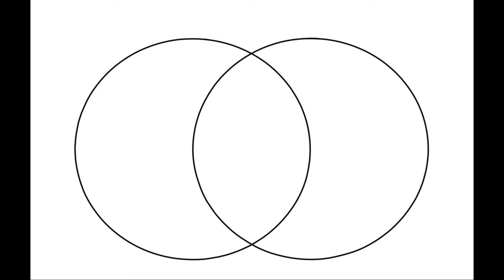Where the circles don't overlap, you'll be writing differences between the two objects, and where they do overlap, that's where you'll write down the similarities. Make sure that you label the two circles of your Venn diagram so that you know what each one represents.